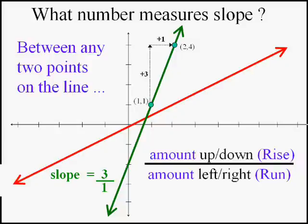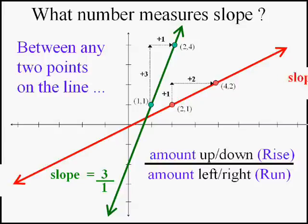So the slope is three over one, or three. The slope of this line — and I'll pick any two points — is not quite as high as three. I went up one for every two I went over. The slope is, in fact, one-half or 0.5 in this case.